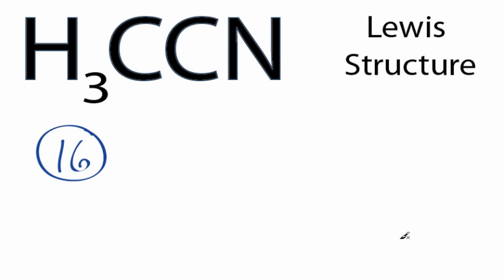We always put hydrogens on the outside of Lewis structures, and then the carbons and nitrogens. Carbons less electronegative, that's going to go at the center. So we'll put our two carbons at the center, put our nitrogen on the end, and let's put our hydrogens on the end right here.